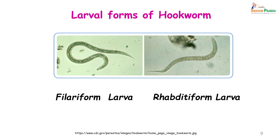The larval forms of the hookworm consist of the newly hatched rhabditiform larva, which then matures into the infective filariform larva. The rhabditiform larva is short and stout, whereas the filariform larva is slim and long.